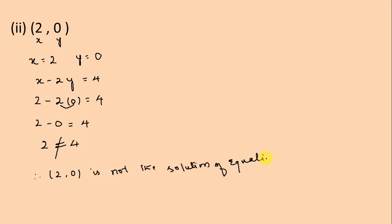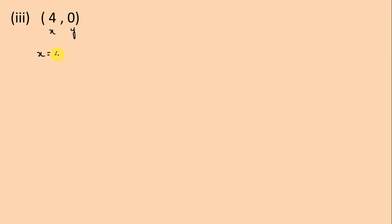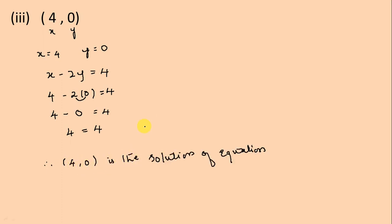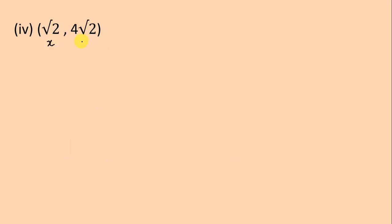Let's move to the third part. Here x = 4 and y = 0. We write our equation: x minus 2y is equal to 4. We replace x with 4 and y with 0: 4 minus 2 times 0 is equal to 4, giving 4 minus 0 equals 4. Here LHS is equal to RHS, so therefore (4, 0) is the solution of the equation.